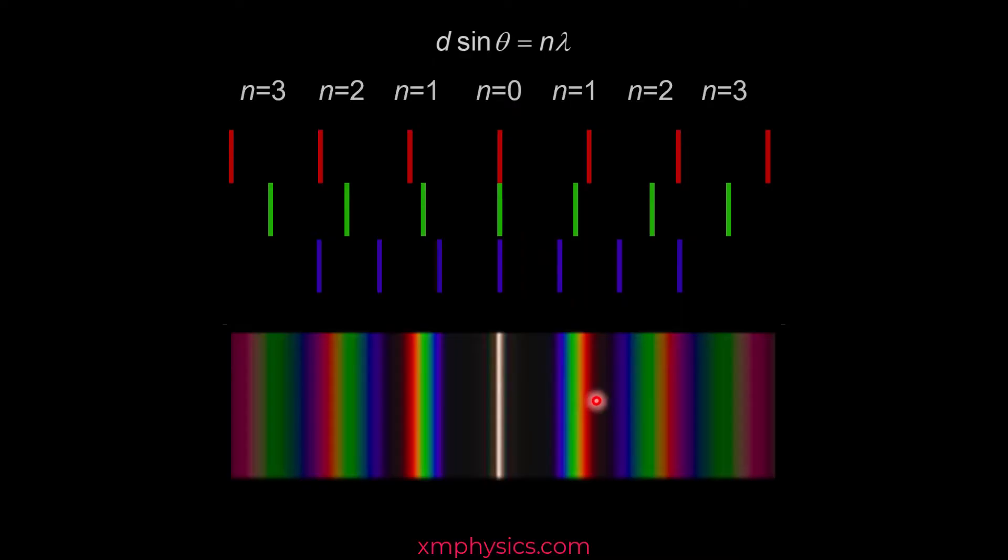And then you've got the dark space here before you get the very beautiful first order rainbow spectrum, starting with the blue's first order, ending with the red's first order. And then you've got the dark space here before the second order bright fringe starts. Starts here and ends here. And then you have the third order rainbow spectrum starting from here, ending here.